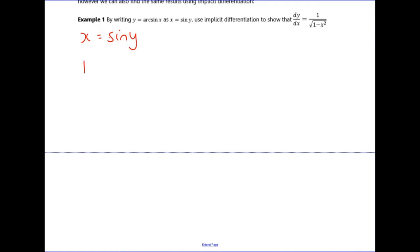Differentiating the left-hand side gives 1. Differentiating the right-hand side: if you differentiate sine you get cosine, so you get cos(y). And because it's in terms of y instead of x, implicitly I need to multiply by dy/dx because of the chain rule.